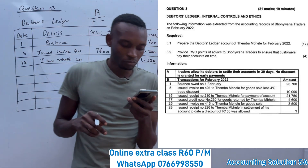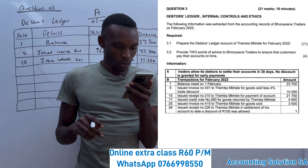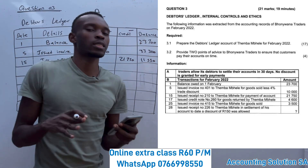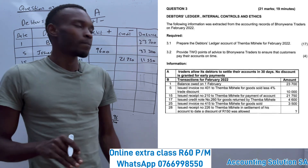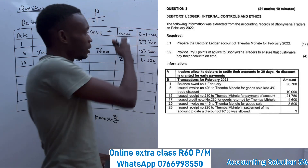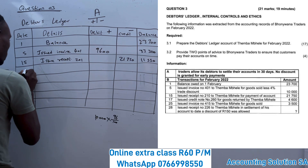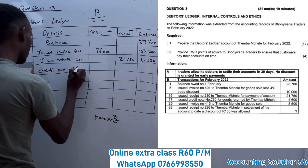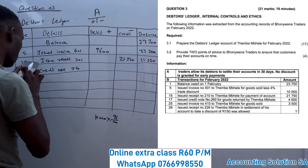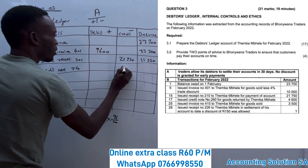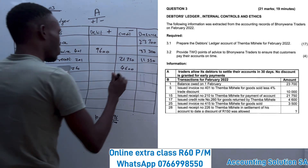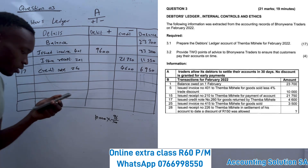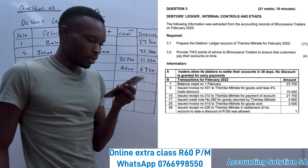On the 17th, they issued credit note number 260 to Tembambele for goods returned. A credit note simply means the customer has returned goods — he is not going to pay for those goods because he returned them, which means his liability is going to decrease. The credit note is for R4,600. So R11,550 minus R4,600 gives us a balance of R6,950.